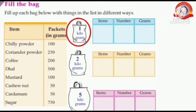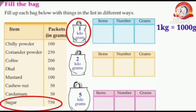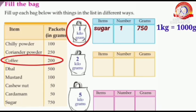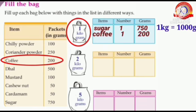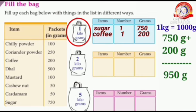We need to fill a 1 kilogram bag. One kilogram equals 1000 grams. First, let's take one packet of sugar — its weight is 750 grams. Next, let's take one packet of coffee — its weight is 200 grams. The total weight is 750 grams plus 200 grams, which equals 950 grams.